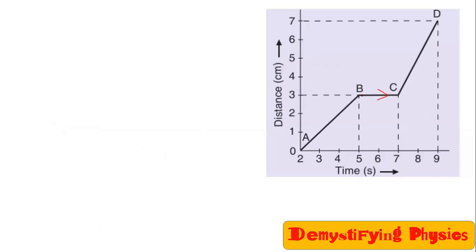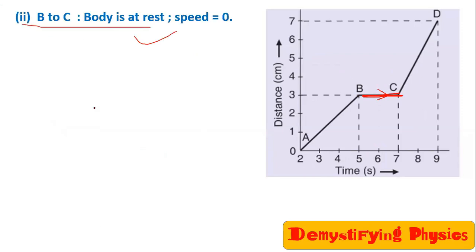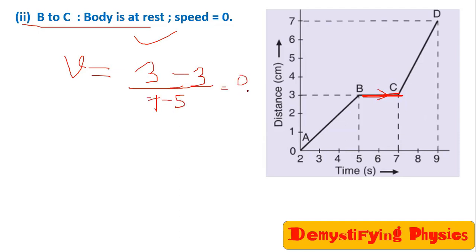When the body moves along BC, it is a straight line parallel to the time axis, which means the body is at rest, so speed is 0. You can verify: at C, distance is 3; at B, distance is 3; time interval is 7 minus 5. So it is 0 upon 2, which equals 0.